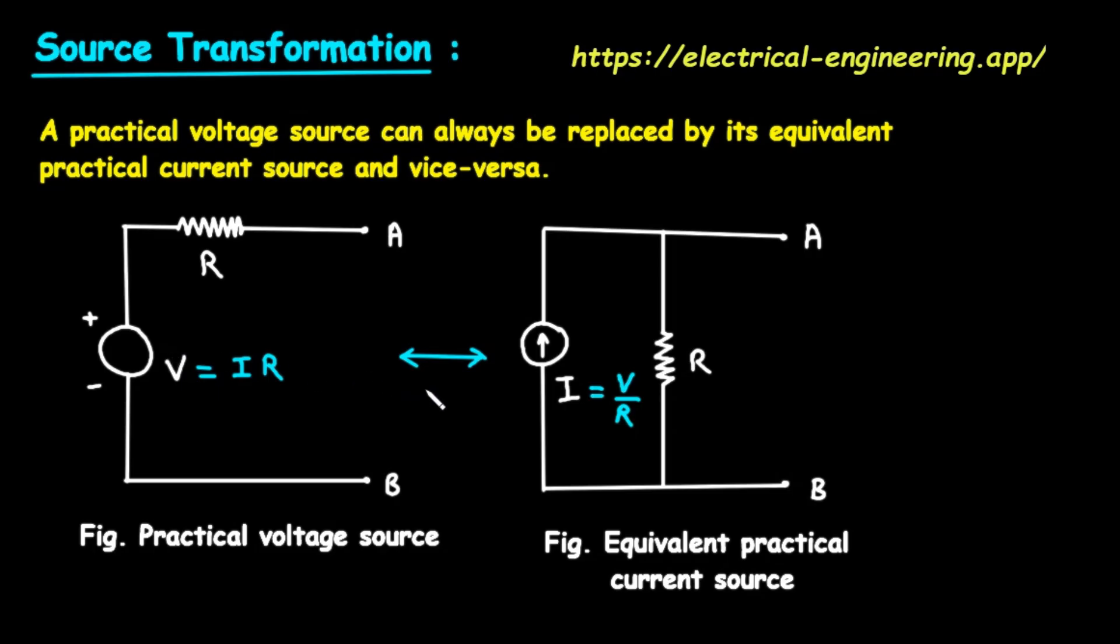Step 1, the resistor. This is the easy part. The resistor R in the new circuit has the exact same value as the resistor in the old circuit. The only thing that changes is its position. It moves from being in series with the voltage source to being in parallel with the new current source.